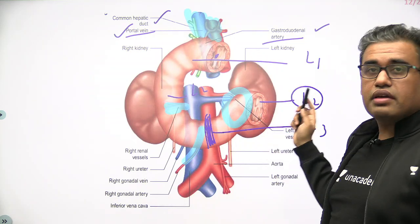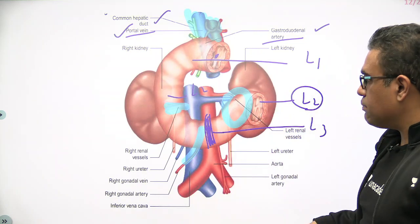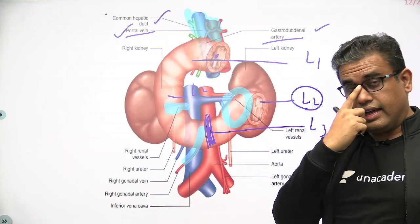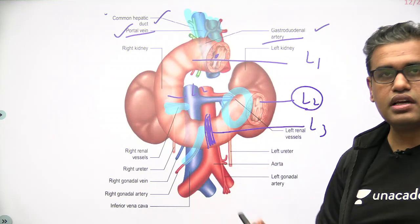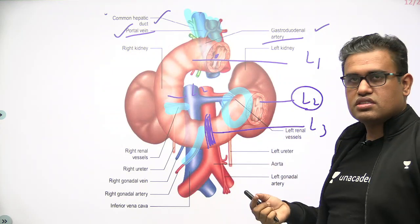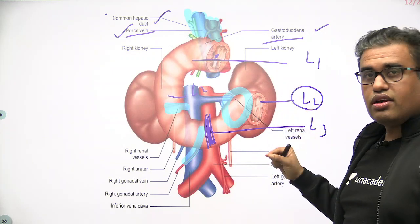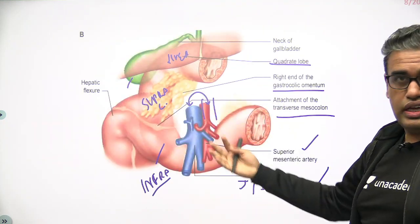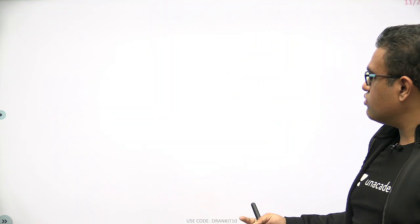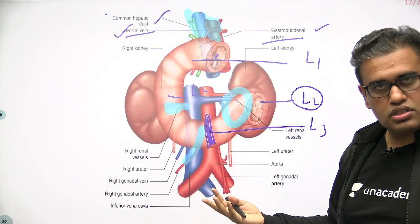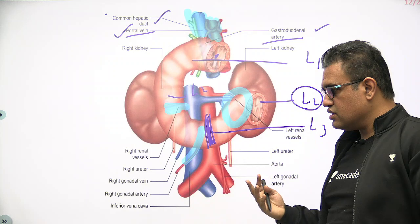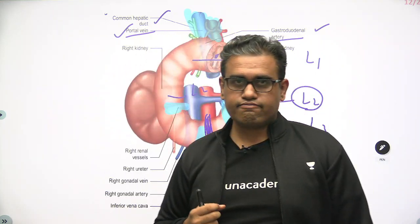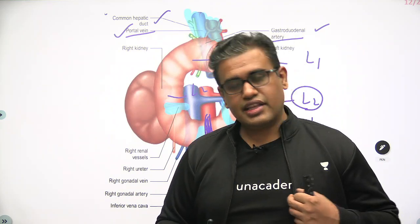These are the posterior relations — all important structures lying behind the duodenum. Surgically, since all these structures are retroperitoneal and fixed, you must know which structures you may encounter when approaching the duodenum for any procedure. These relations are what exams like NEET, NEXT, and INICET ask about. I hope you enjoyed the lecture. Thank you for your time.